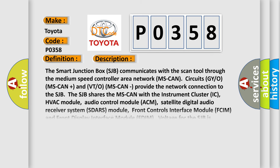The smart junction box SJB communicates with the scan tool through the medium speed controller area network MS-CAN circuits. GYO MS-CAN plus and VTO MS-CAN provide the network connection to the SJB. The SJB shares the MS-CAN with the instrument cluster IC, HVAC module, audio control module ACM, satellite digital audio receiver system SDARS module, front controls interface module FCIM, and front display interface module FDIM. Voltage for the SJB is provided directly from the internal SJB bus bar through SJB fuse 510A; ground is provided by circuit BGY.